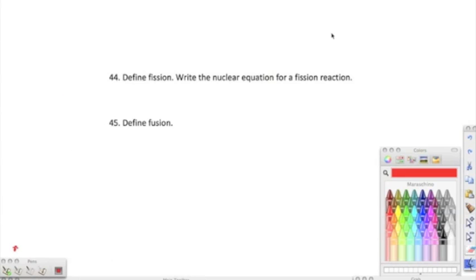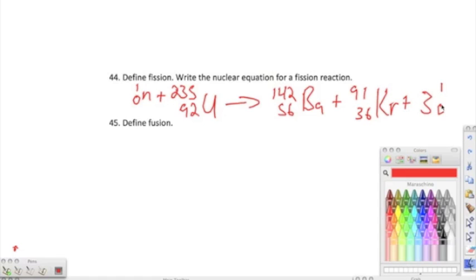Here on number 44, it says, define fission and write a nuclear equation for fission reaction. Fission is the splitting of a heavy nucleus into two nuclei with smaller mass numbers. It always starts with an addition of a neutron. So in our equation, we're going to have one neutron. And here, we're going to use uranium-235. Uranium has an atomic number of 92, symbol of U. What happens is that neutron comes in and it bombards that uranium nucleus, and it creates uranium-236, and it breaks apart into barium-142 and it breaks up into krypton-91. And then we have three neutrons that go off and keep the reaction going. And it releases a lot of energy.